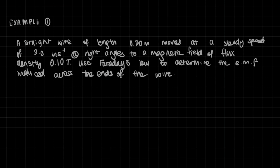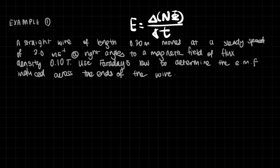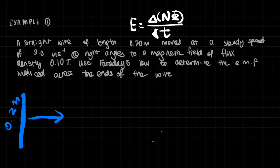Let's take a look at a question. Example one tells us that a straight wire of length 0.2 meters moves at a steady speed of 3.0 meters per second at right angles to a magnetic field of flux density 0.10 Tesla. Use Faraday's law to determine the electromotive force induced across the ends of the wire. Faraday's law is E = ΔNΦ/Δt. Drawing this out, we have a straight wire of 0.2 meters traveling at right angles to a magnetic field going into the page, with flux density 0.10 T.